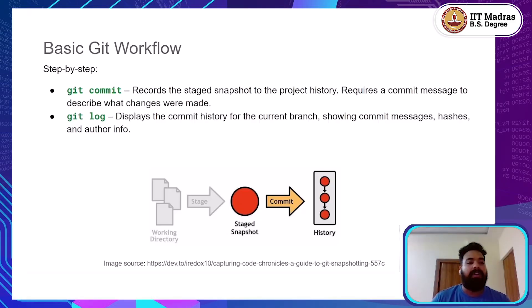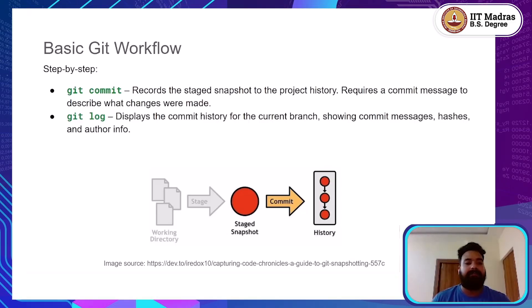You can always look back at the history of your commits using the git log command. This shows all your commits on the current branch, along with details like the commit message, the author, and a unique commit hash. This history allows you to trace when and why changes were made.